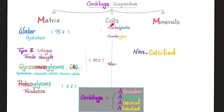Cartilages are made of matrix and cells. There is no calcium in the normal cartilage. The cells are chondroblasts and chondrocytes. The chondroblasts are the stem cells that make the chondrocyte.